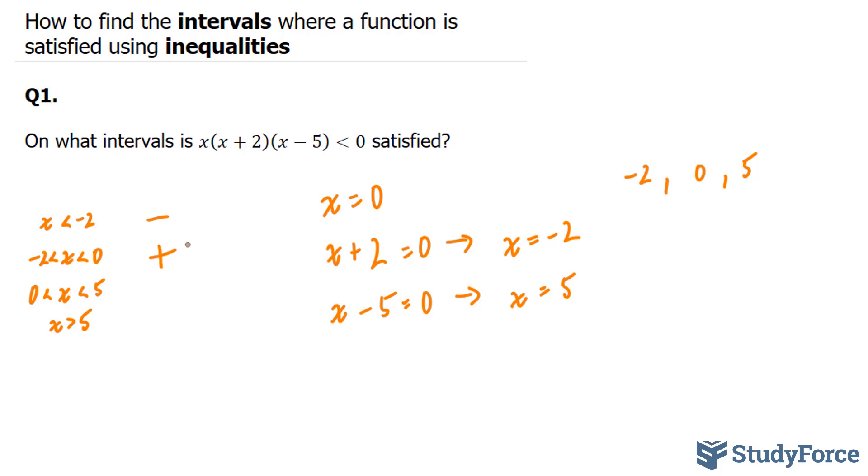If I choose a number between 0 and 5 and plug it into here, I'll get a negative number. And you can confirm that by choosing any number between 0 and 5 using your calculator. And finally, choosing a number greater than 5 will also give you a positive number.